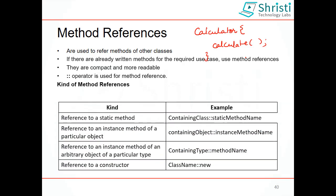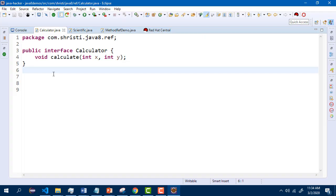The four kinds are: referring to a static method, referring to an instance method of a particular object, referring to an instance method of a particular type, and referring to a constructor. Let us see all these one by one using examples.